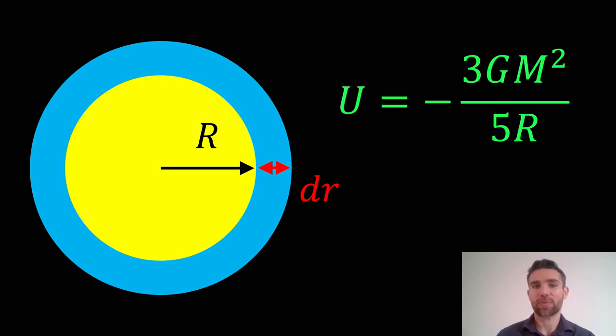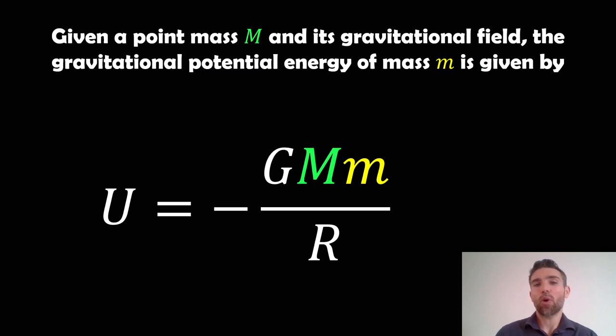So where do we start? Well, given a point mass M (uppercase M) and its gravitational field, the gravitational potential energy of mass m is given by this equation. We've got G, which is the gravitational constant, the point mass M, the lowercase m which is a smaller mass, and that's divided by R, which is the radius of a sphere.